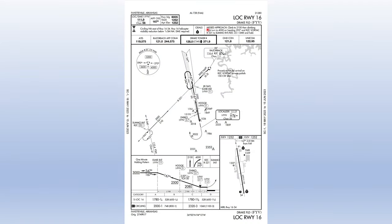The chart shows our missed approach procedure: if we reach the missed approach point or DDA and need to go missed, we climb to 2,100 feet straight ahead, then make a right turn climbing to 4,000 feet on a heading of 295, intercept the Razorback VOR's 221-degree radial — the same one we track down to intercept the localizer — and track it to Sumo Intersection at 22.1 DME, then enter the holding pattern. This is depicted on the plan view.